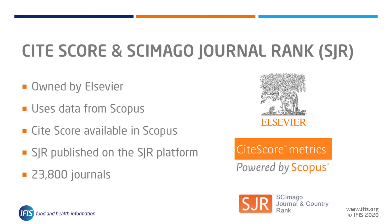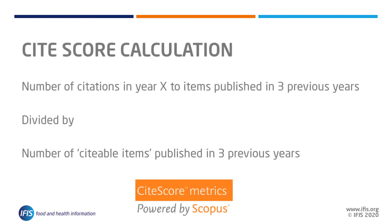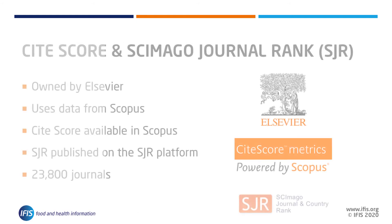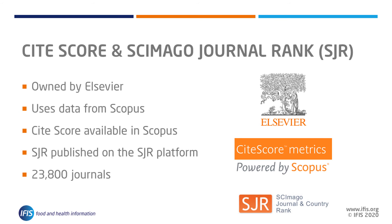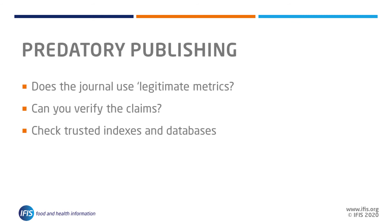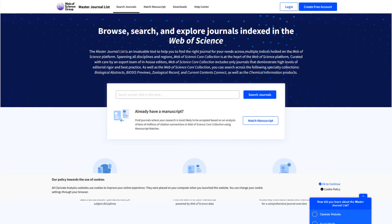Elsevier's Scopus platform holds the bibliometric data used to calculate the SCImago Journal Rank and CiteScore. The Scopus CiteScore is calculated in a similar way to the Impact Factor, but over the most recent three years rather than two. Unlike the subset of journals in Web of Science that are granted Impact Factors, all journals within Scopus receive an SJR and CiteScore. We have a separate video devoted to predatory publishing, but here we note the possibility to use Web of Science or Scopus to verify whether a journal that claims to have a certain metric really does. Even without subscriptions, you can check whether a journal is legitimately indexed by Clarivate using their master list and Scopus's public site.